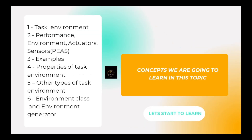In this topic, we are going to learn what is task environment, what is performance, environment, actuator, and sensors for different agent types. We will also cover examples, properties of task environment, other types of task environment, what is environment class, and environment generator. Let's start to learn.